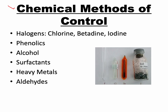Now we'll talk about chemical methods for controlling microbial growth: halogens, phenolics, alcohol, surfactants, heavy metals, and aldehydes. With all antimicrobial chemical agents, how much you use and how you apply it determines whether it kills microbes or just inhibits their growth — cidal or static. Different chemicals target different parts of the microbial cell; for example, alcohol targets the microbial membrane, while others target and inactivate proteins.